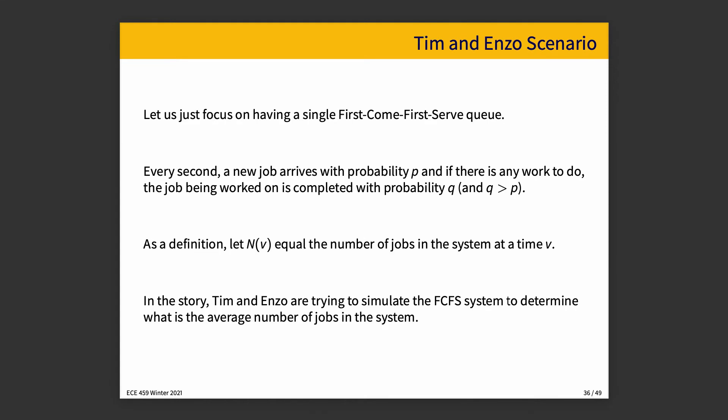Let's consider a scenario in which we have a single first come, first serve queue. Every second, a new job arrives with probability P, and if there's any work to do, then the job in progress is completed with probability Q, and Q is greater than P, so our system is not overloaded. We're going to use the term N(v) to denote the number of jobs in the system at time v.